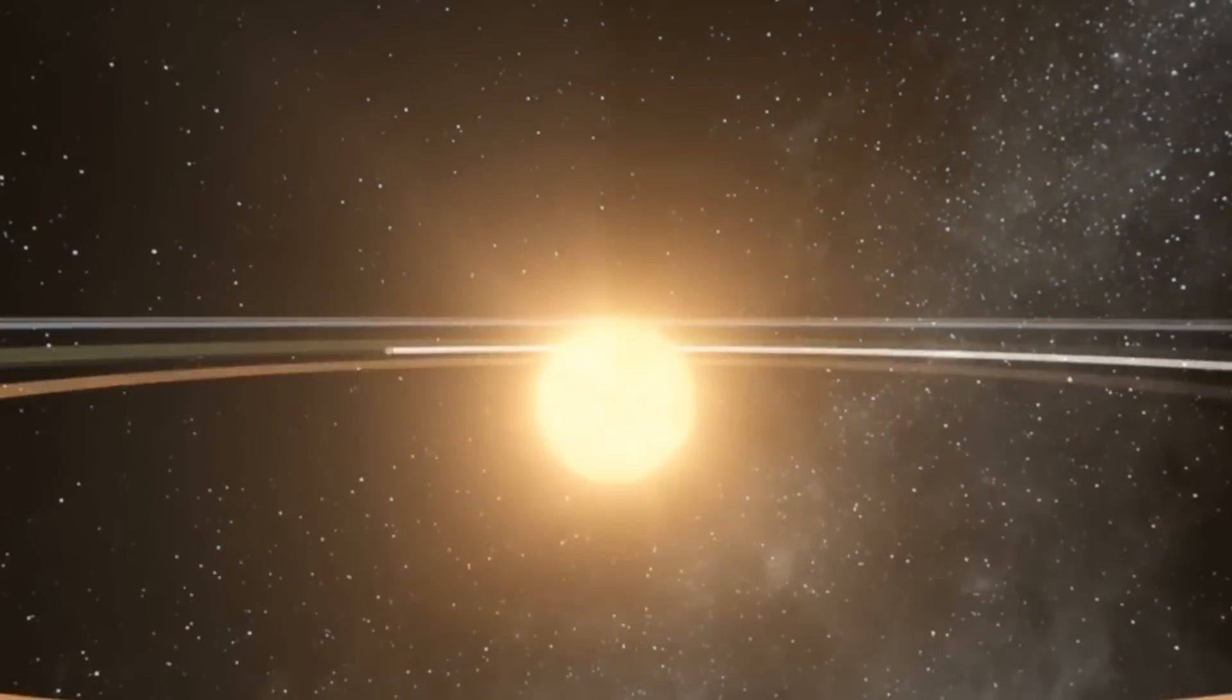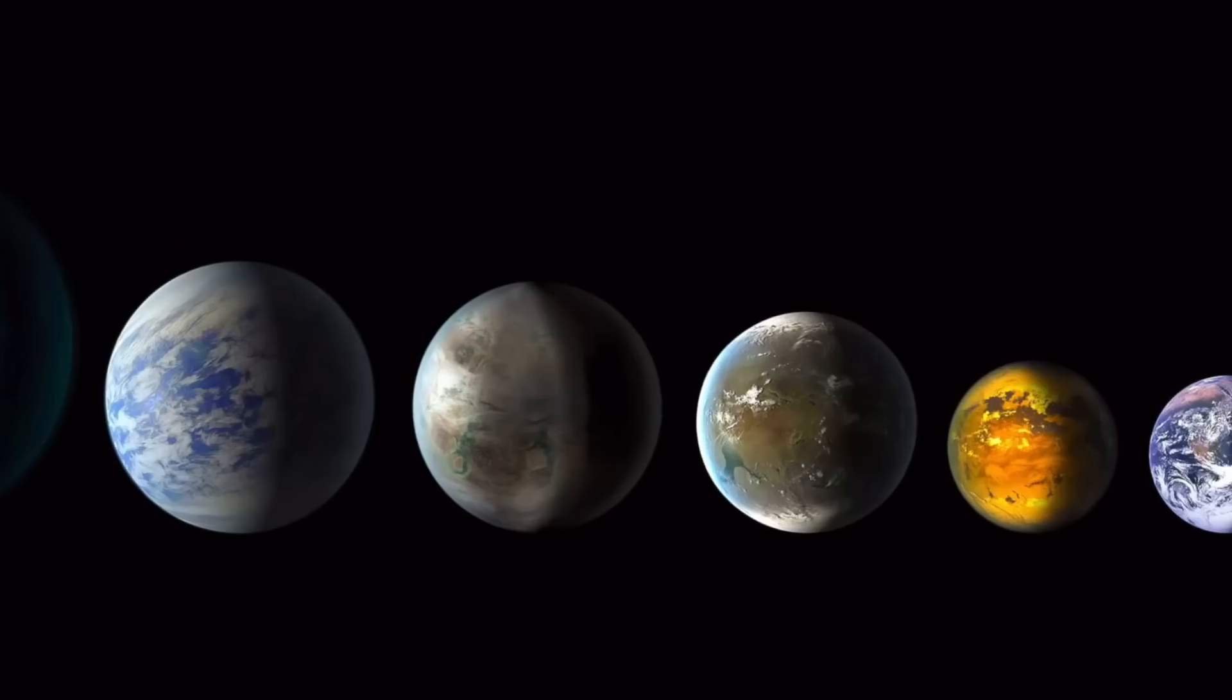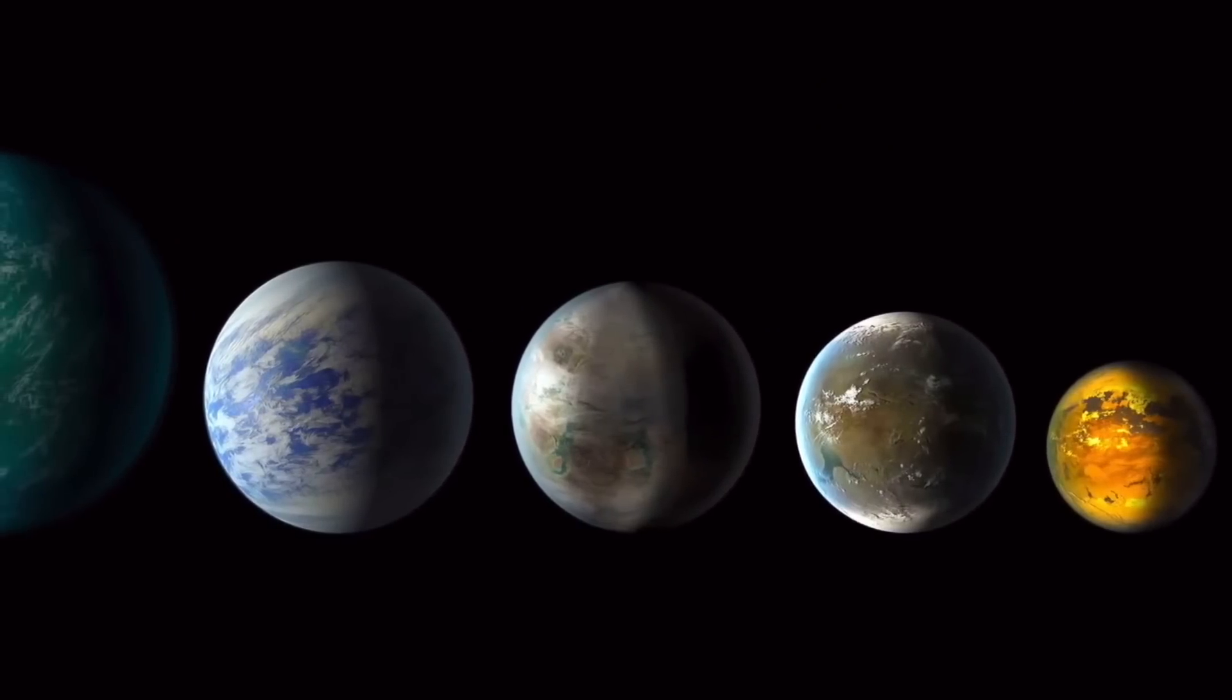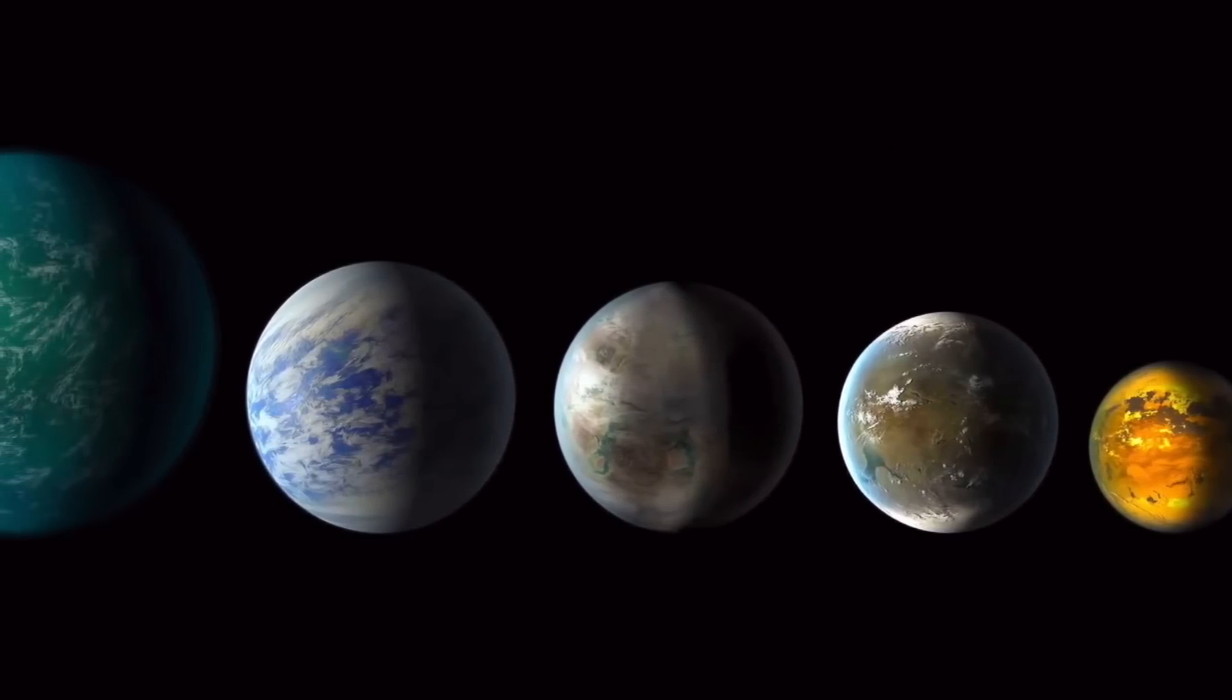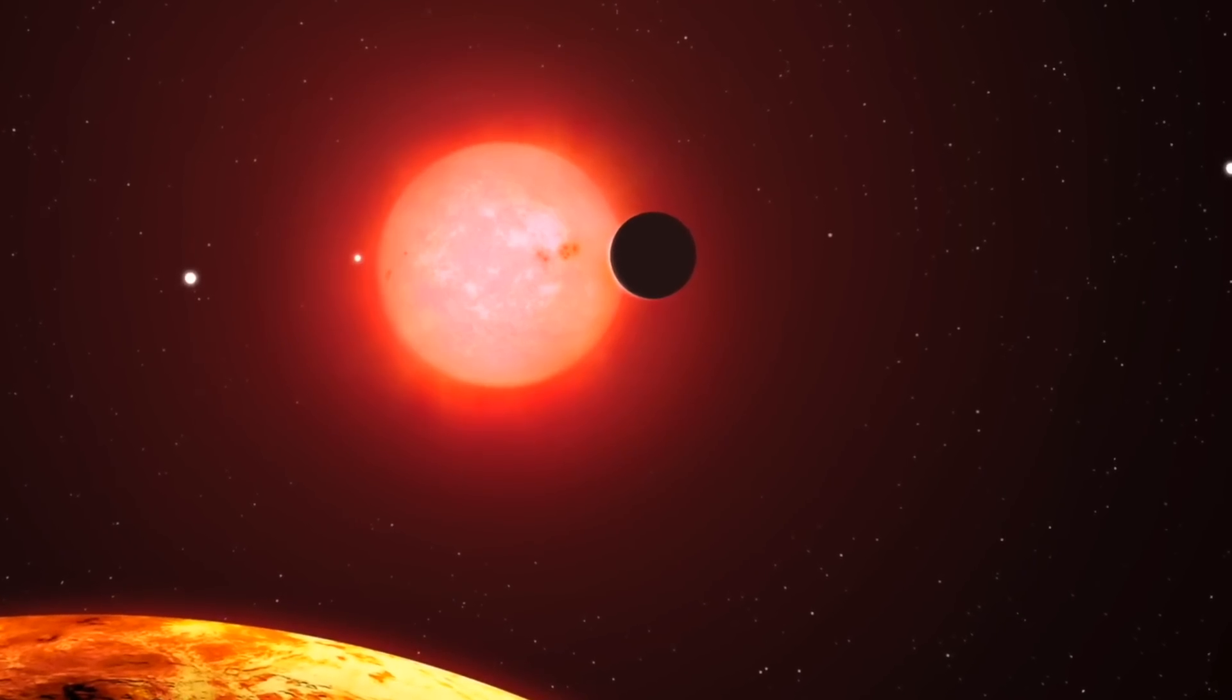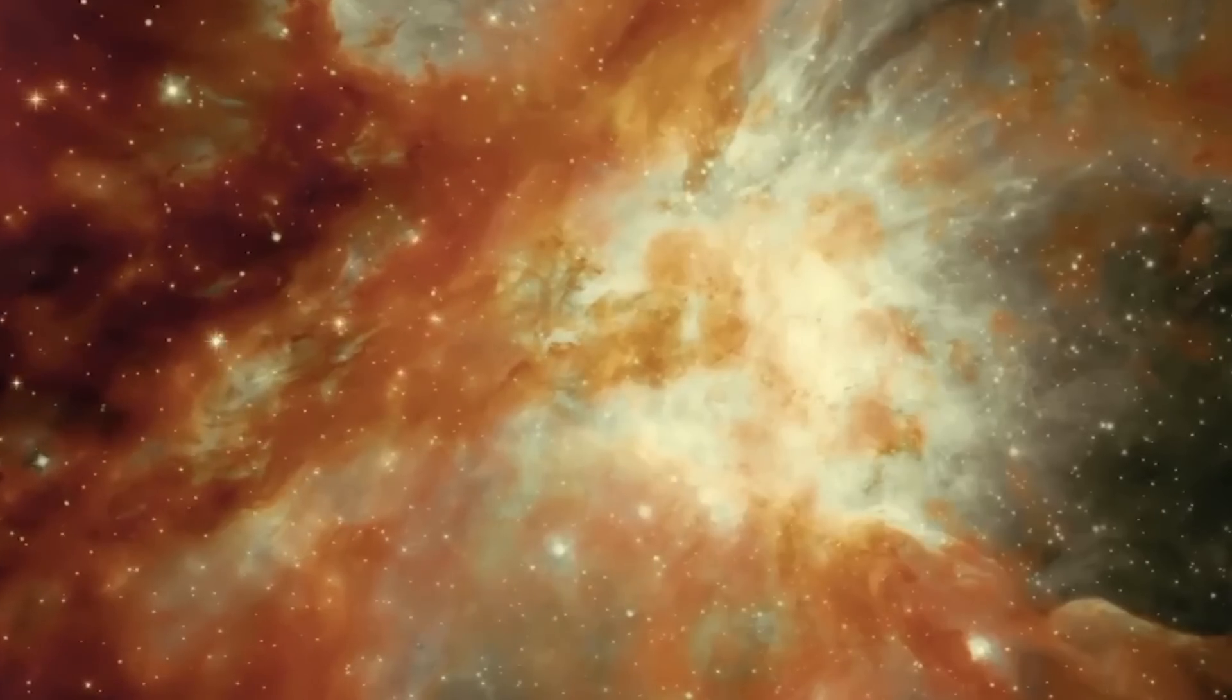Last year more than 2,000 groups submitted proposals to use JWST in the first cycle, but a time allocation committee selected 266. Dozens of these programs will look at planets. Out of all the exoplanets that JWST will look at in Cycle One, Natalie Batalha reckons that the three TRAPPIST planets that orbit their star's habitable zone probably have the best shot at featuring detectable biosignature gases.